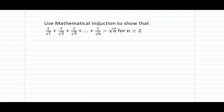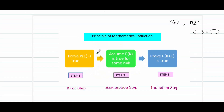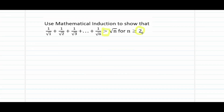Problem number one: use mathematical induction to show that 1/√1 + 1/√2 + ... + 1/√n is greater than √n for n greater than or equal to 2. There are two things to observe: first, the greater-than sign — we are proving an inequality, not an equality. Second, this problem specifies that the principle works for n greater than or equal to 2, so the basic step begins with p(2), not p(1).